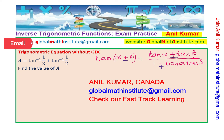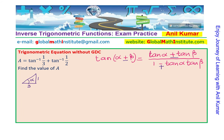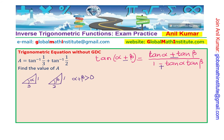The very first one is tan inverse (1/3) plus tan inverse (1/2). If we consider two triangles where α and β are the two angles — when we do tan inverse (1/3), we get a triangle with angle α. The other one is tan inverse (1/2), giving angle β. When you add these two expressions, you get α plus β, and α plus β is greater than zero — it is positive.